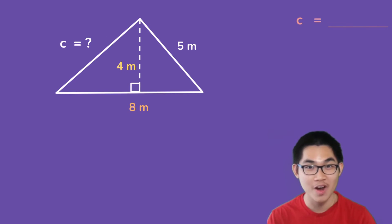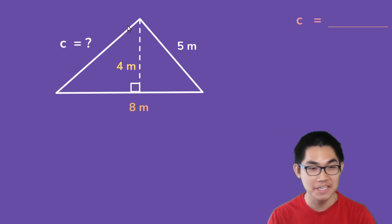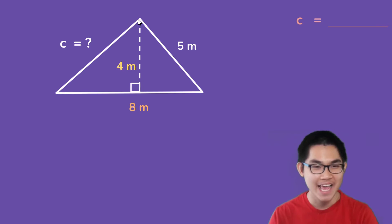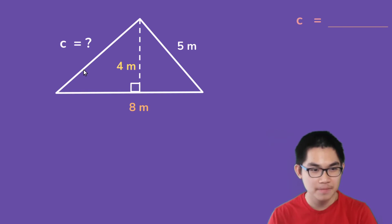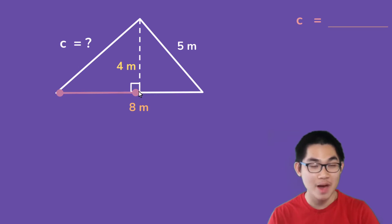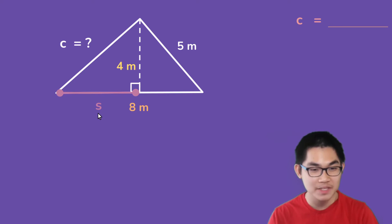Let's do one last problem. So in this triangle, what is length c? Now, this problem is a bit harder than the ones we have done. So when I look at this triangle, in order to find c, we need to know this length and this length. We know that this is 4, but we don't know what this side is. So I'm going to call this side s. Now, to find s, we also need to find what this side is. And I'm going to call this side x.